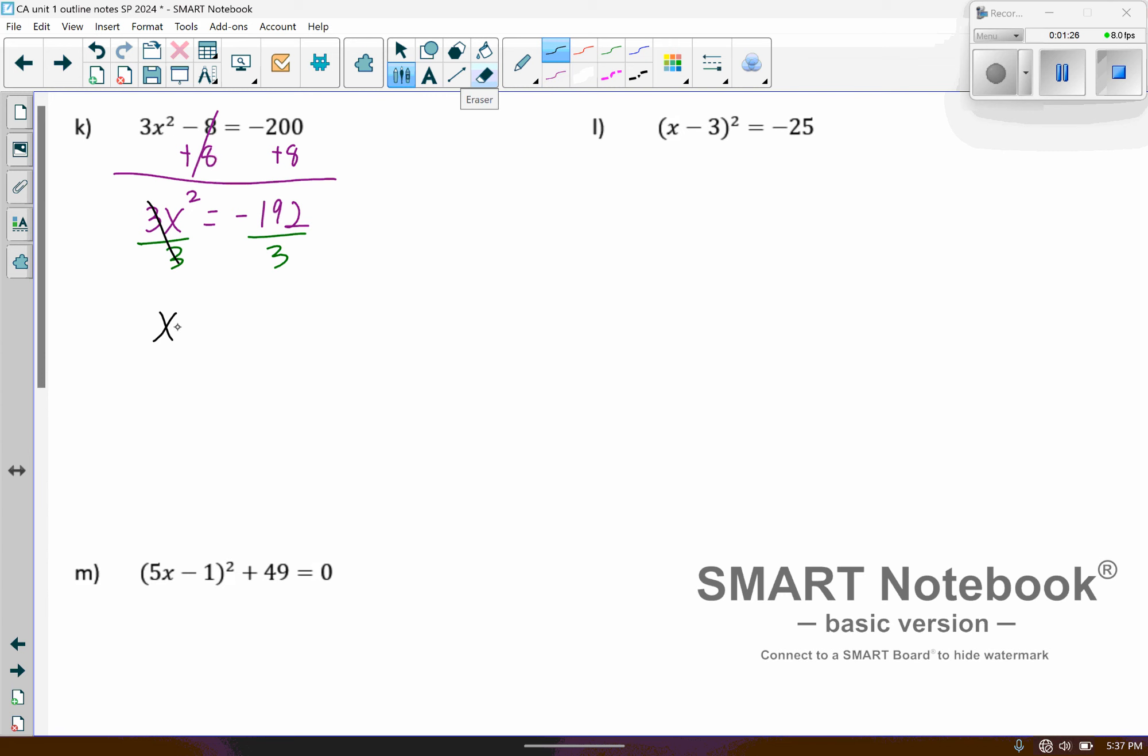We end up with x squared equals negative 64. Okay, so that worked out pretty nice. And so then we'll go ahead and square root both sides, put our plus or minus right there. This should be pretty similar to the previous one. So we're going to get x equals plus or minus 8i.